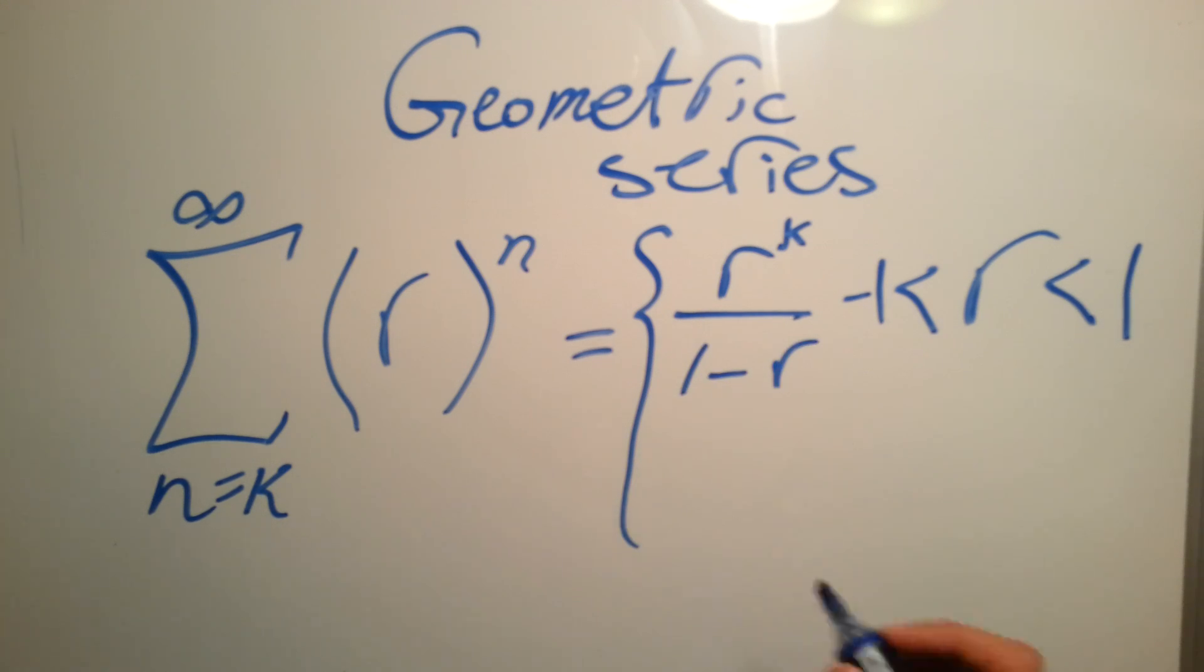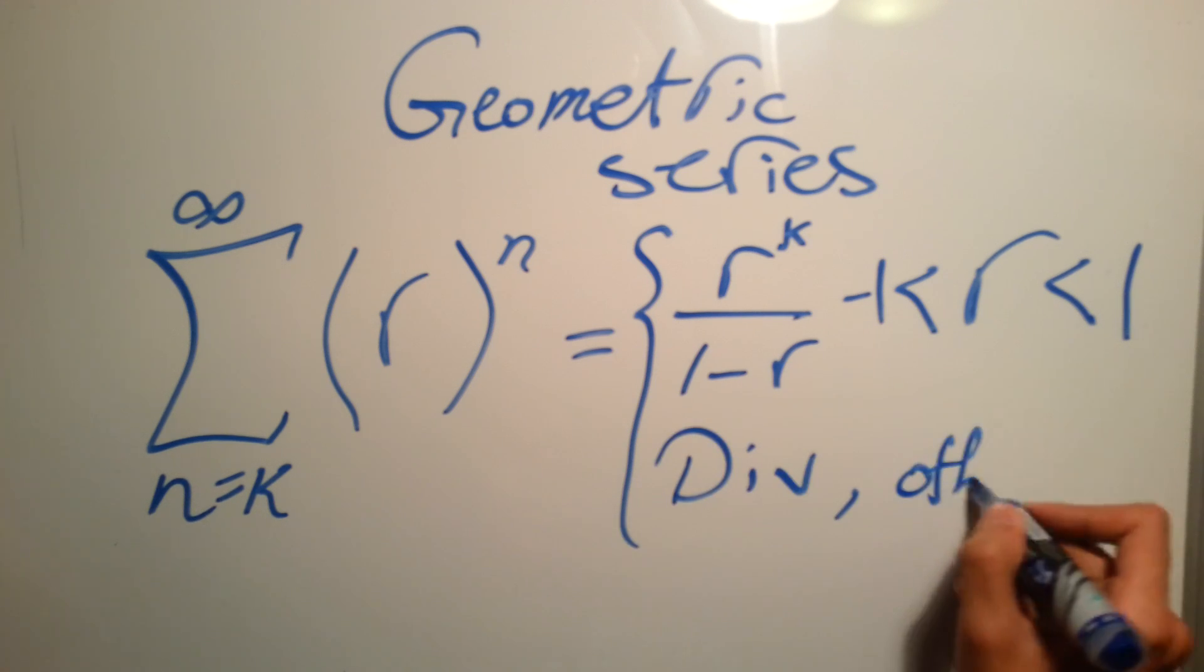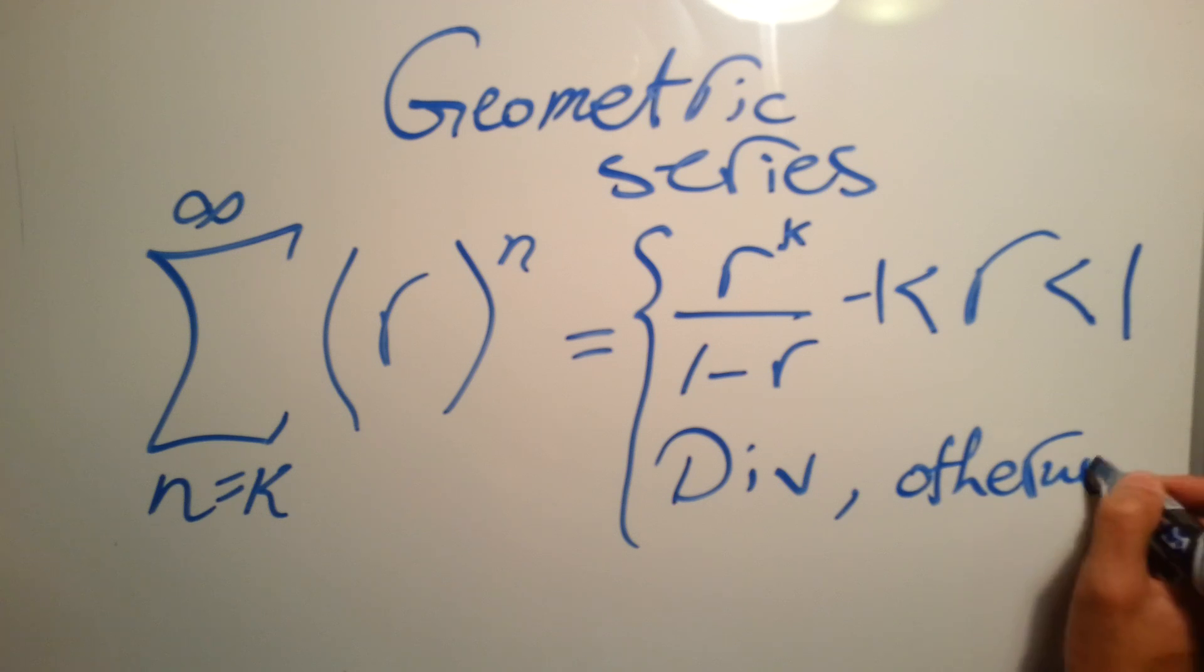So if it was one, two, three, or minus one, two, three, it has no solution or it diverges.